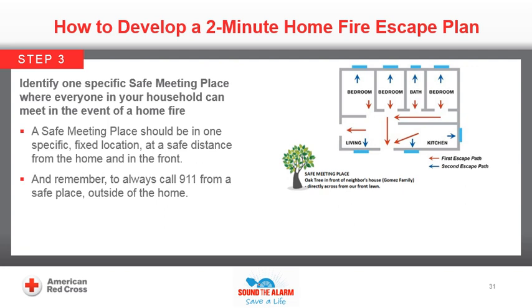What makes a good safe meeting place? What makes a poor choice? The driveway of the Lopez Family Home directly across the street from the front door — good choice, because it is one specific fixed location at a safe distance from home, in the front. Garage — no, not a safe distance from home, with flammable materials inside. A motorcycle that is usually parked outside — no, because someone may move it and it is not a fixed location.